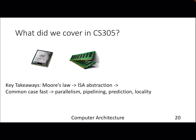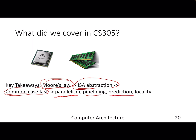To summarize the course: we started with the notion of ISA and assembly language in the form of MIPS, then Amdahl's Law, processor pipelining, exploiting parallelism at both thread and instruction levels, prediction at various levels such as branch predictors and prefetchers, locality — spatial and temporal — in caches and memory. These are the keywords that capture the essence of this course.